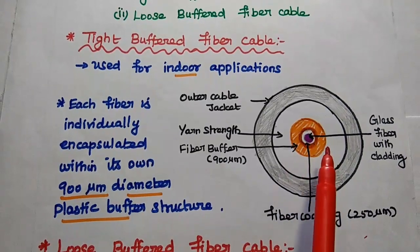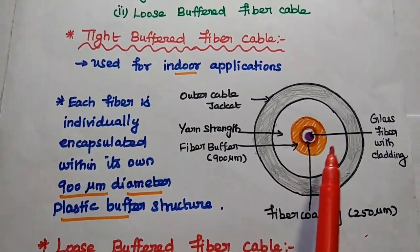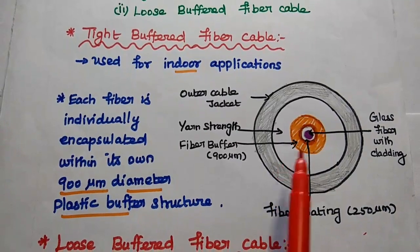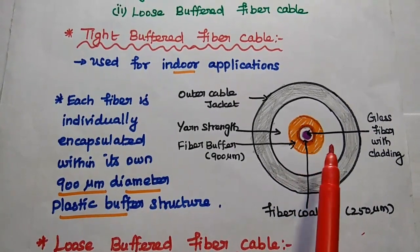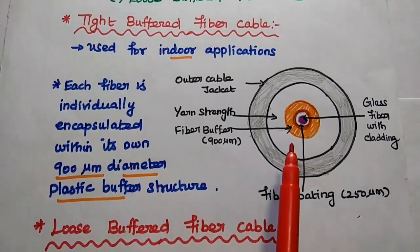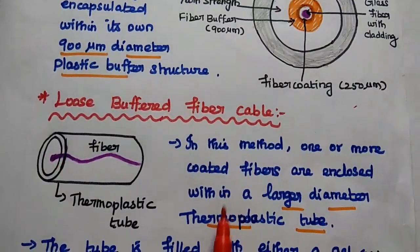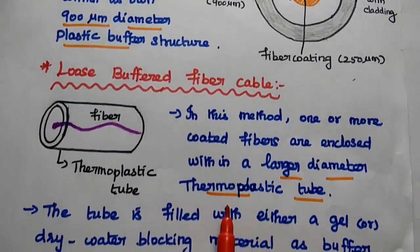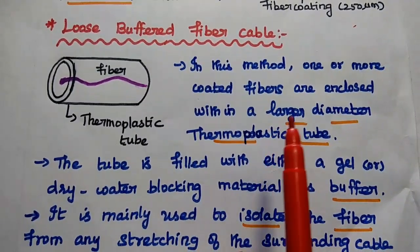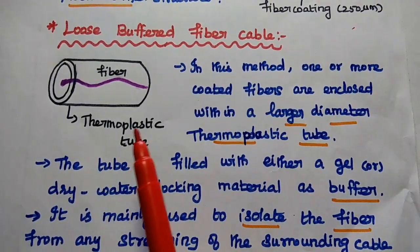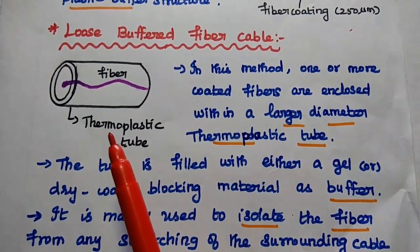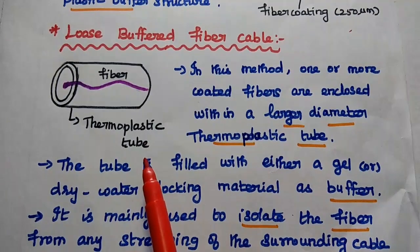It provides more strength to the fiber cable to protect the fiber from environmental changes. This fiber cable is mainly used for indoor applications. Next is loose buffered fiber cable. In this method, one or more coated fibers are enclosed within a larger diameter thermoplastic tube.